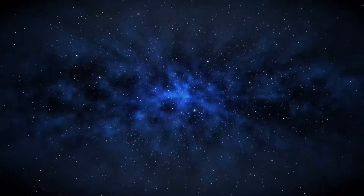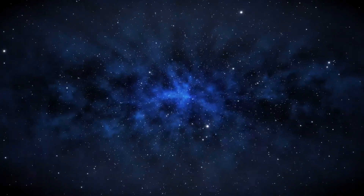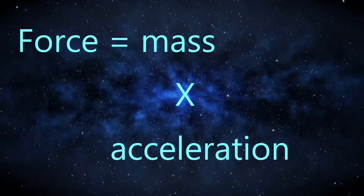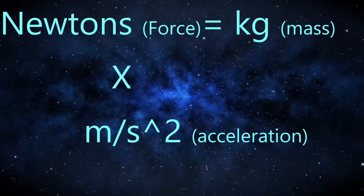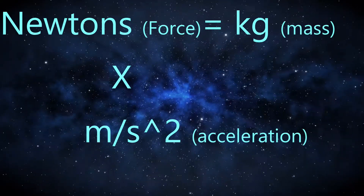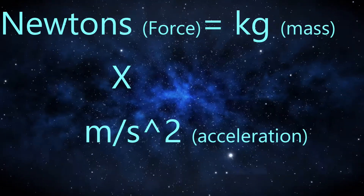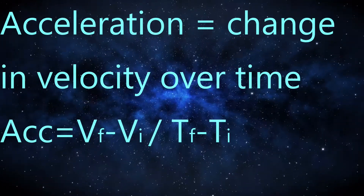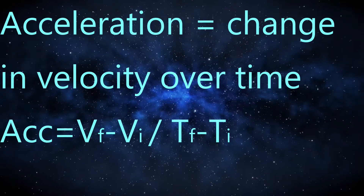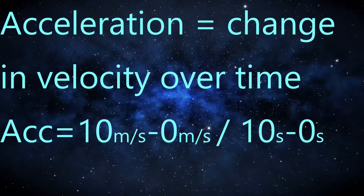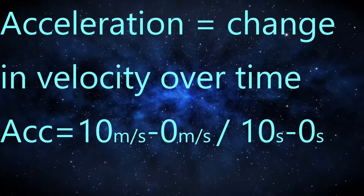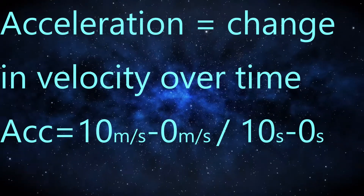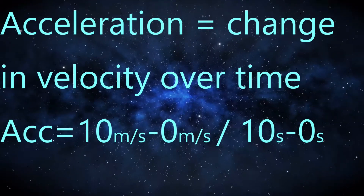Now let's look at force. One of the equations for force is force equals mass times acceleration. Keeping track of the units is important: force is measured in newtons — kilogram meters per second squared — while mass is measured in kilograms and acceleration in meters per second squared. Acceleration is a change in velocity over time. So going from zero to ten meters per second over a time of ten seconds gives you ten meters per second minus zero meters per second over ten seconds, equals one meter per second squared.